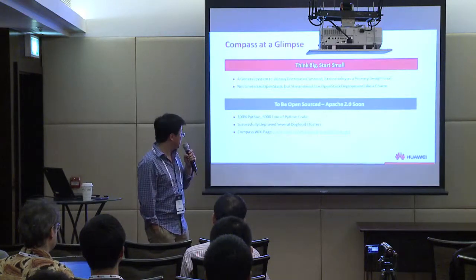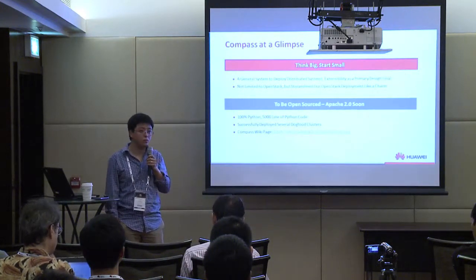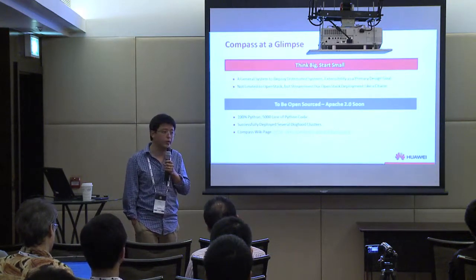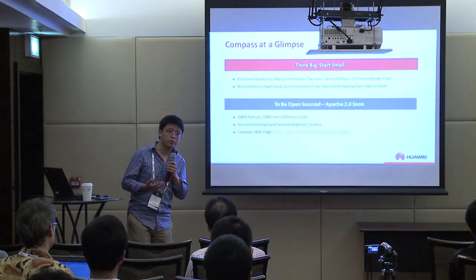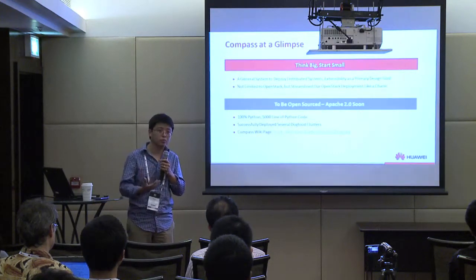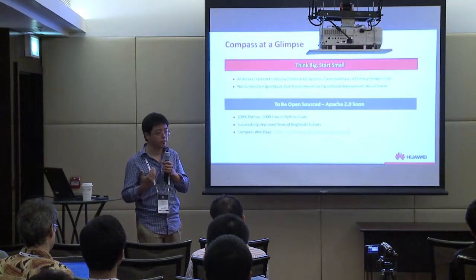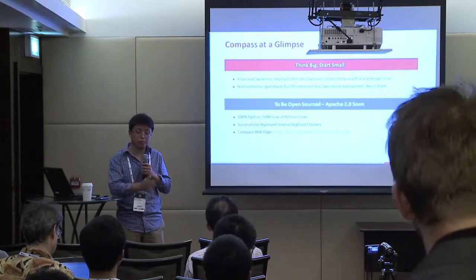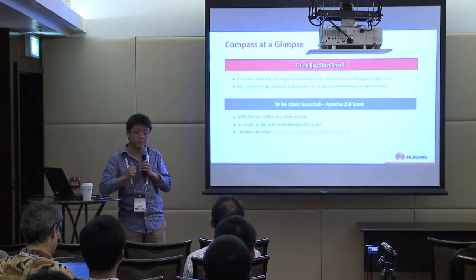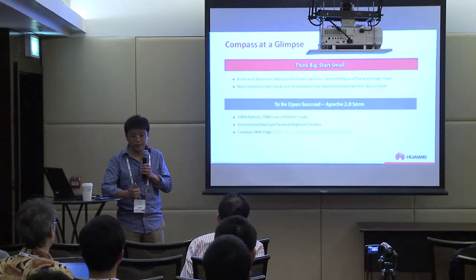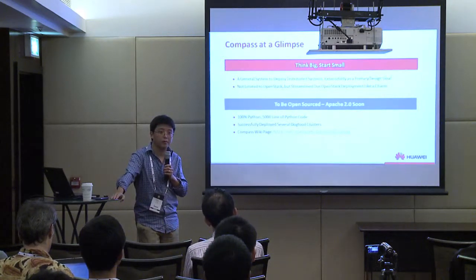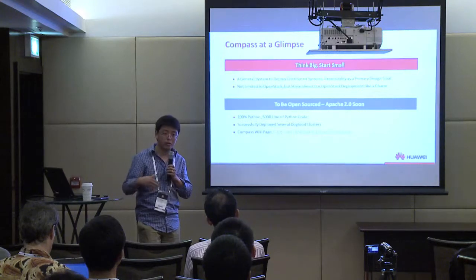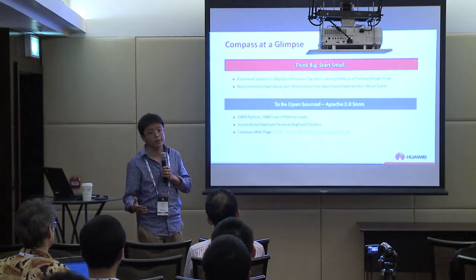To talk about Compass, I need to bring some context. When we started this design, we set a pretty ambitious goal: to deploy any complex distributed system onto general-purpose commodity servers. With that goal, our primary design decision from day one was to make extensibility our first priority. We were not trying to limit ourselves to deploying just OpenStack, but our first working system streamlined the OpenStack deployment process.